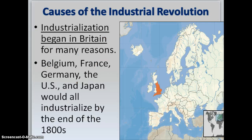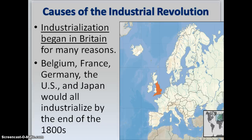The first country to really get a grip on industrialization was Britain — shown in red on the map — an island that includes England, Scotland, Wales, and Ireland. Industrialization began there for many reasons but would spread quickly. By the end of the 1800s, industrialization had reached Belgium, France, Germany, Japan, and the USA.